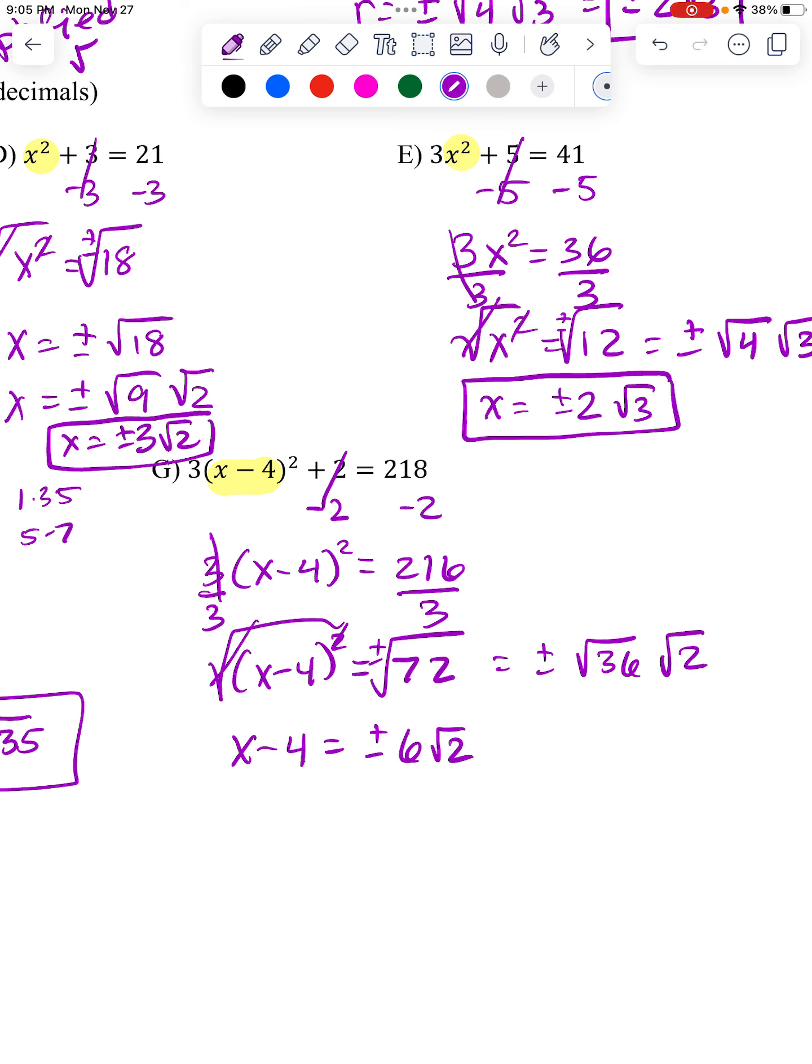But again, I'm trying to get x alone, and it has a minus 4. So I'm going to add that to the other side. So when I'm done, I get x equals 4 plus or minus 6 root 2. And again, I can't add the 6 and the 4 because one of them is attached to the root 2. So it would be like having 4 plus 6x. You can't put them together.